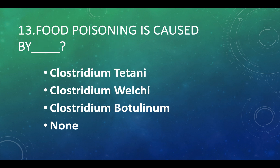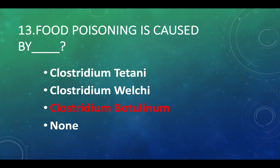Food poisoning is caused by: Option A — Clostridium tetani, Option B — Clostridium welchii, Option C — Clostridium botulinum, Option D — none of these. Answer: Option C, Clostridium botulinum.